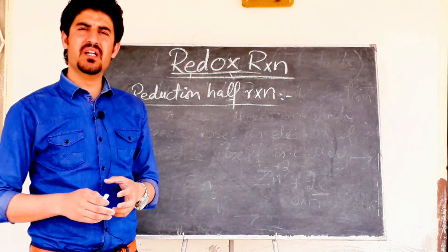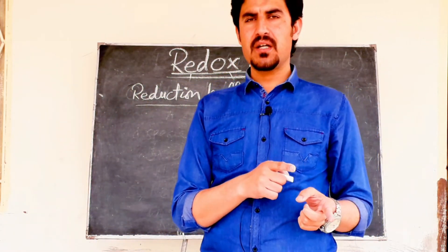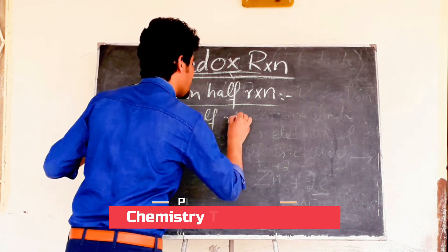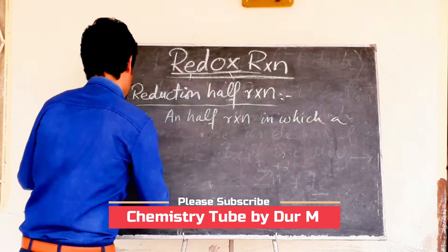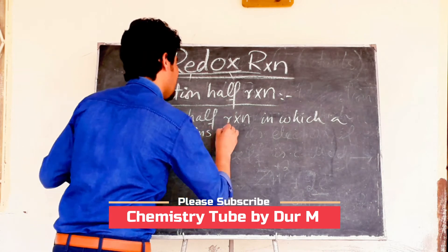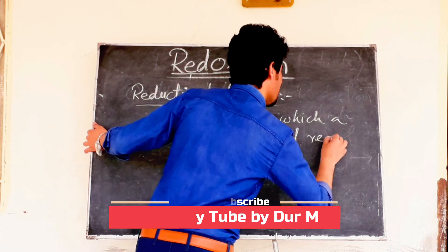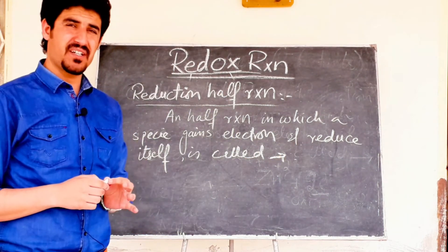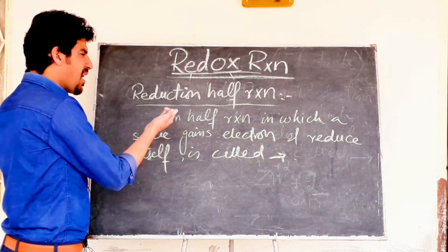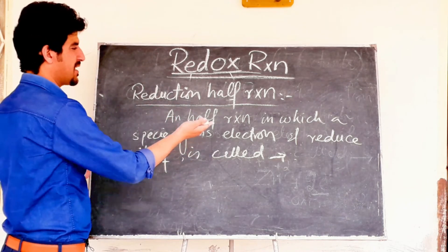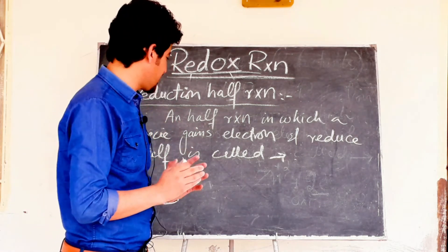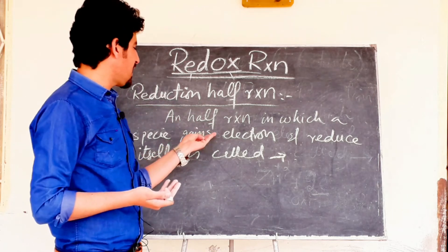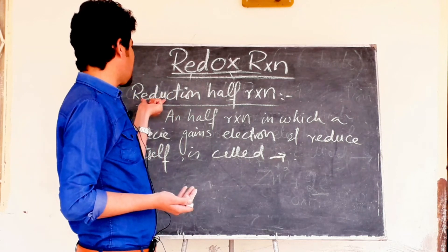Now let's study the reduction half reaction. What is the reduction half reaction? We have studied the oxidation half reaction. Now let's study the reduction half reaction. The reduction half reaction can be defined as a half reaction in which a species gains electrons and reduces itself. The gain of electrons is reduction. This is called the reduction half reaction.